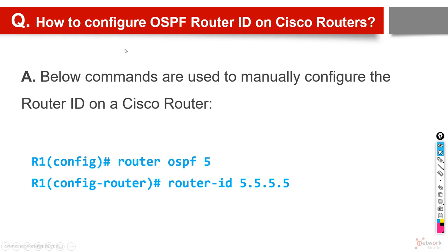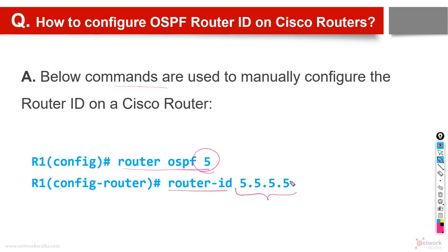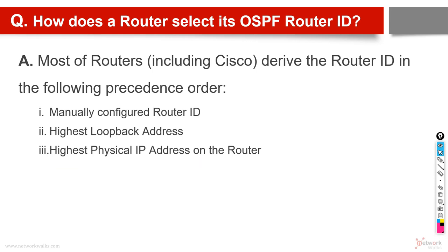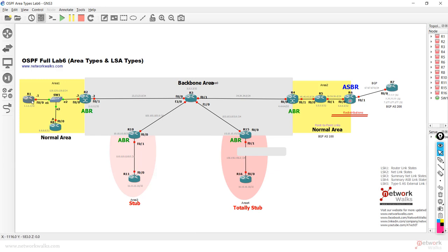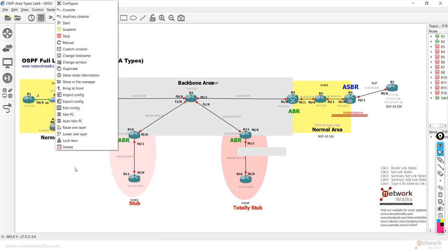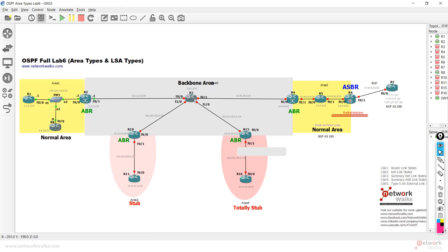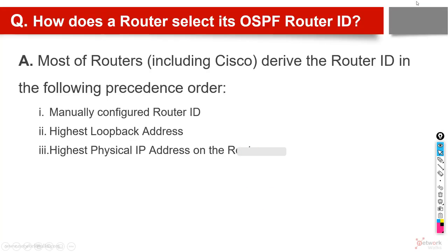How to configure OSPF Router ID on Cisco routers? It's very simple — just one command. Enter the OSPF process with 'router ospf 1' and then use 'router-id' followed by the ID you want to assign. This is method number one — manually configuring the Router ID. Let me start a few routers to demonstrate practically as well. I'll start just a few routers because starting all of them might affect the recording.